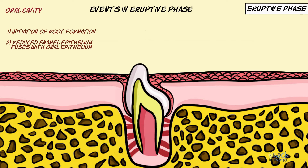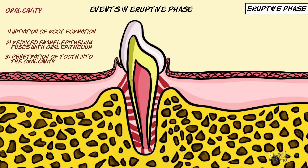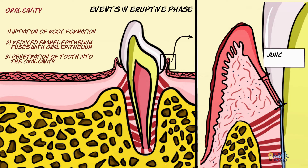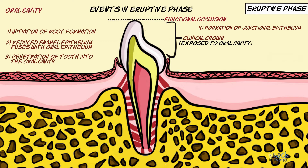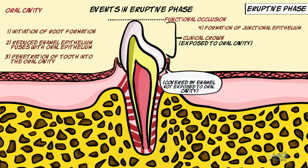The tooth crown then pierces the epithelium and enters the oral cavity. As it erupts further, the lateral borders of the oral epithelium which fused with the reduced enamel epithelium form the attachment epithelium, or the junctional epithelium. The tooth continues to move occlusally and finally reaches functional occlusion. The part of the crown exposed to the oral cavity is called the clinical crown, and the portion covered by enamel but not exposed is called the anatomic crown.